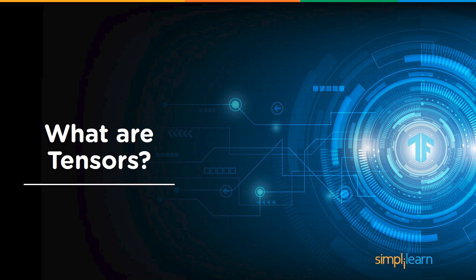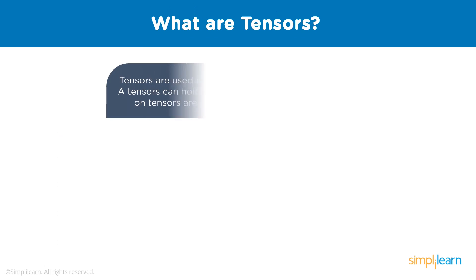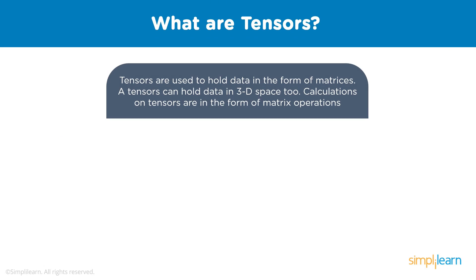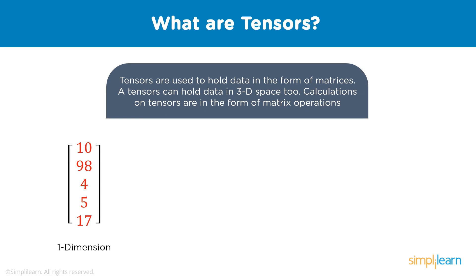What exactly are tensors? Tensors are simply containers which are used to hold data in the form of matrices. Tensors can be of any dimension and using them we can perform linear operations on vast quantities of data. Tensors can hold data in 3D space too. They can be of one dimension, meaning a single column and multiple rows, or two dimensions with multiple columns and multiple rows.